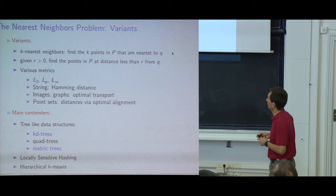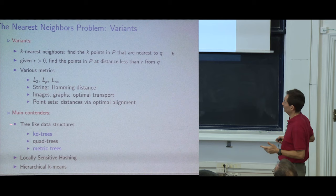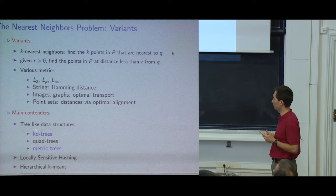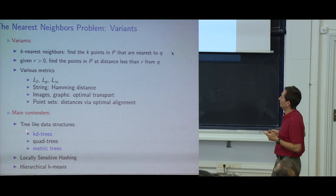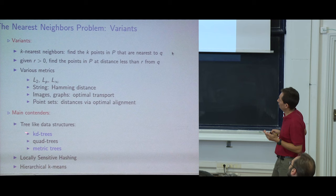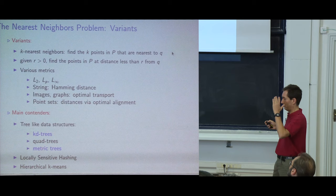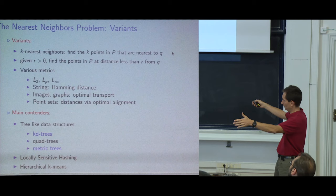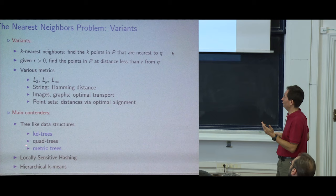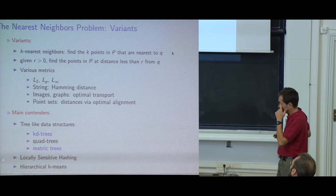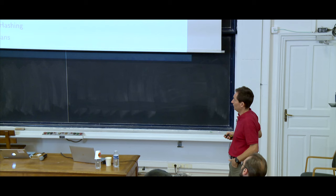From the literature, people have generalized binary search trees to KD trees and quad trees. I'll focus on KD trees. For metric spaces without an ambient embedding, there are metric trees. Alternatives include LSH (locally sensitive hashing) and hierarchical k-means trees, where you run k-means recursively to build a tree for nearest neighbor queries.